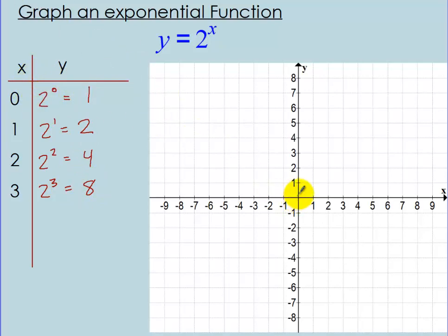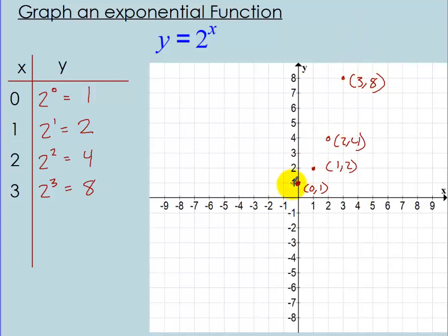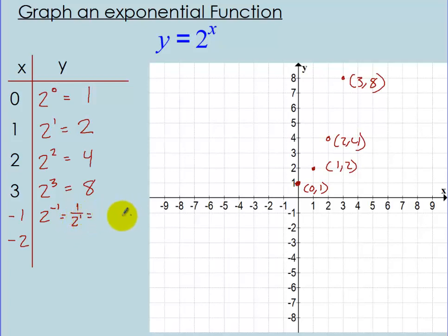I'll plot those points: (0, 1), (1, 2), (2, 4), and (3, 8). You can see the curve goes up really fast. I also want to plot some points to the left. For x equals negative 1: 2 to the negative 1 power converts to 1 over 2 to the positive 1, which is one-half. For x equals negative 2: 2 to the negative 2 power is 1 over 2 squared, which is one-fourth.